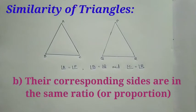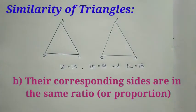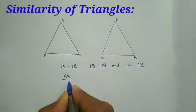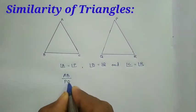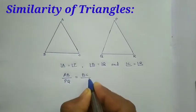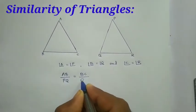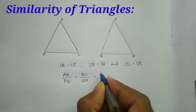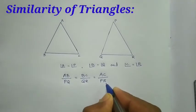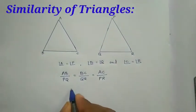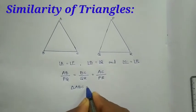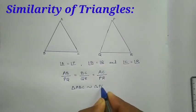Second condition their corresponding sides are in the same ratio or proportion. It means AB by PQ equal to BC by QR equal to AC by PR. Then you can say triangle ABC is similar to triangle PQR.